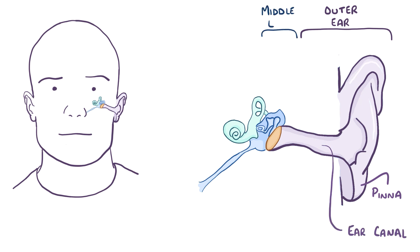Next is the middle ear, which is a tiny chamber that houses the tiny ear bones: the malleus, the incus, and the stapes.